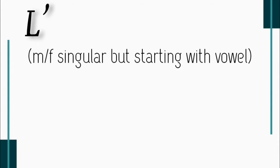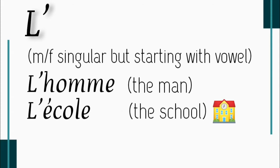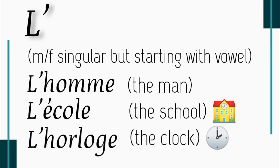Next is l'apostrophe. L'apostrophe is used with singular nouns — it could be masculine singular or feminine singular — but the noun should start with a vowel. If it starts with a vowel, we use l'apostrophe. For example: l'homme — the man — where l'apostrophe is used with a masculine singular noun starting with a vowel. Another example: l'école — the school — which is a feminine singular noun starting with a vowel. Another example: l'horloge — the clock — also starting with a vowel.